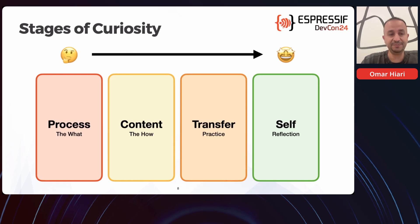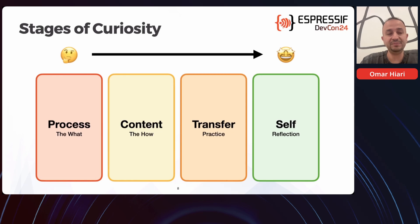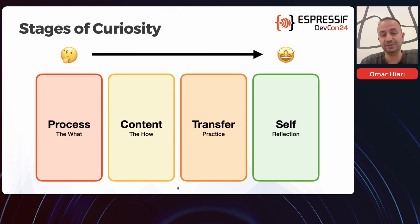Starting with each one: at the process phase, this typically entails providing students with the different tools and frameworks that they would need for learning — it helps orient them into what is required to learn the content coming up. In the second stage, that's where the actual content is delivered, and the teacher or lecturer's duty is to provide quality content to help them learn the material properly and quickly.